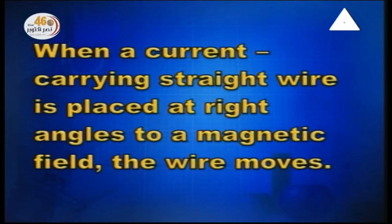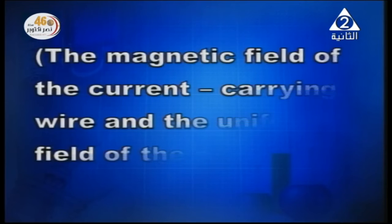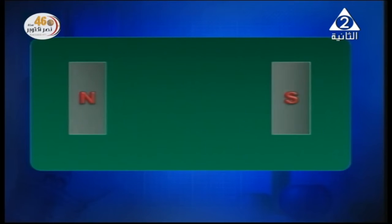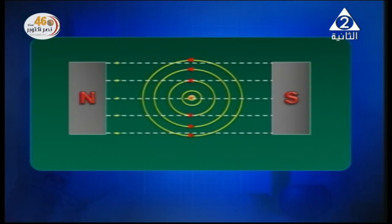When a current-carrying straight wire is placed at right angles to a magnetic field, the wire moves — there'll be a magnetic force acting on the wire. The wire moves due to the interaction between the two fields: the magnetic field of the current-carrying wire and the uniform field of the magnet. As shown in the figure, we've got a magnet whose field is uniform, meaning it consists of straight flux lines which are equally spaced. And we've got a wire carrying current moving out of the screen — the two fields will interact.